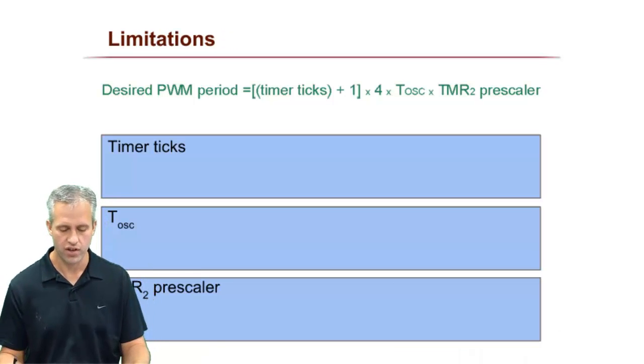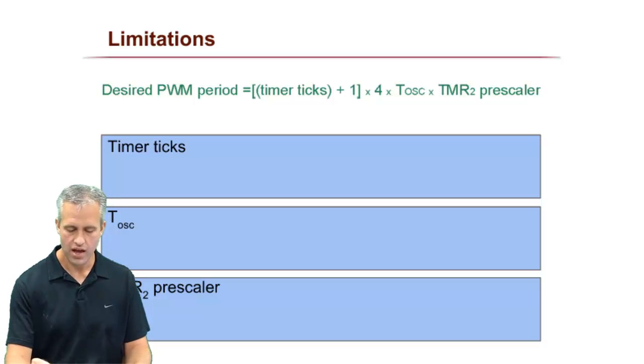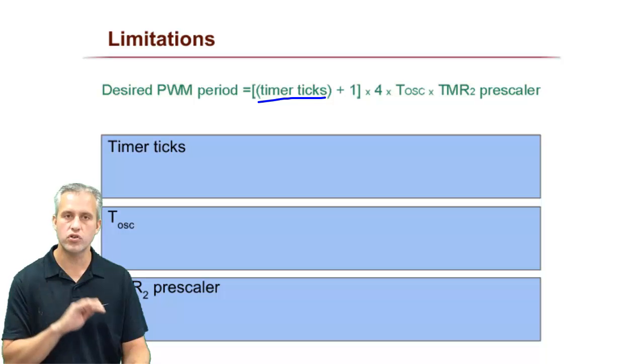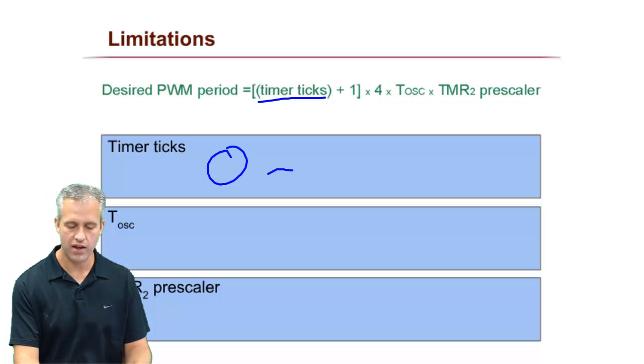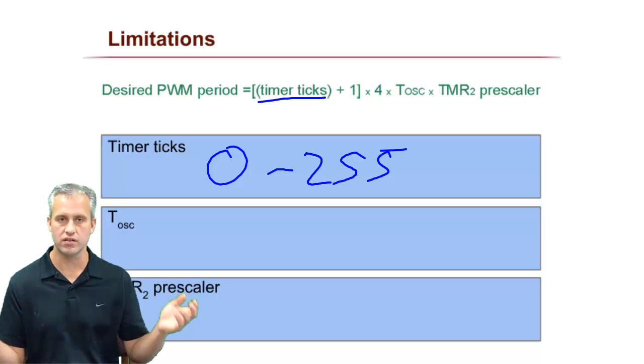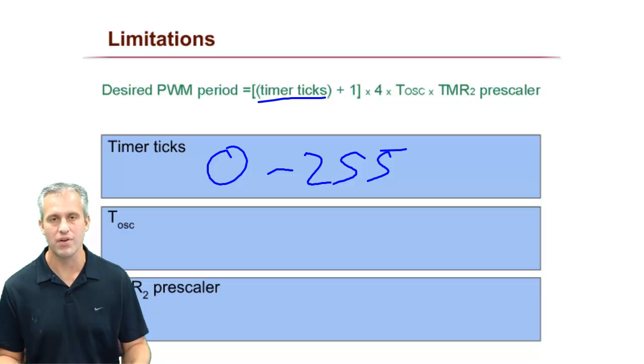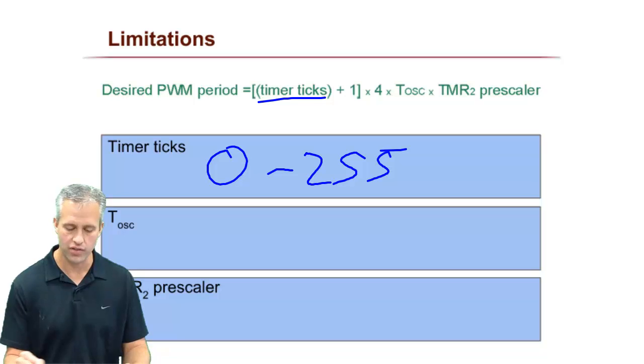Limitations first. So first off, timer ticks. Timer 2 is 8 bits. So this value has to be 0 to 255. If you ever want to send something bigger, then that's not going to work. And you have to figure out something else in the formula to change. So that's the limitation on that one.